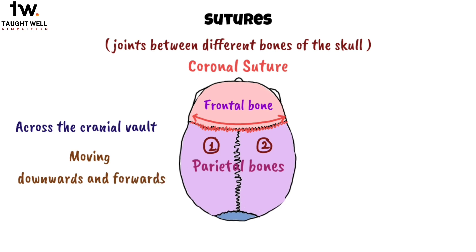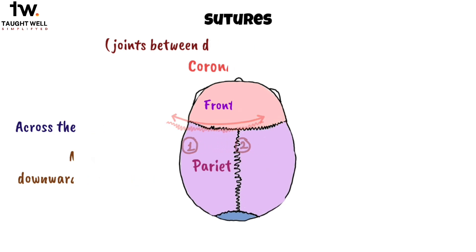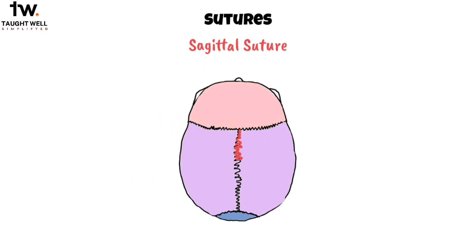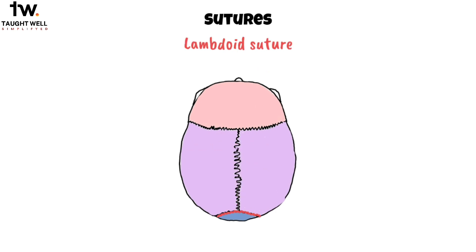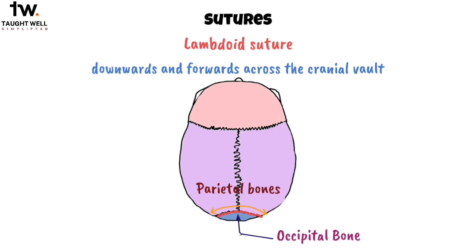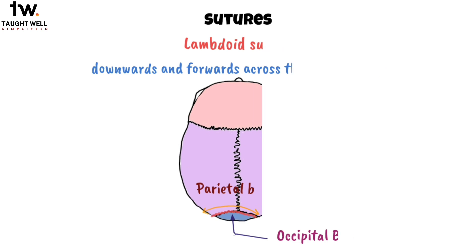Next is the sagittal suture, positioned in the median plane between the two parietal bones. Then, we find the lambdoid suture at the back, between the occipital bone and the two parietal bones. It runs downwards and forwards across the cranial vault.